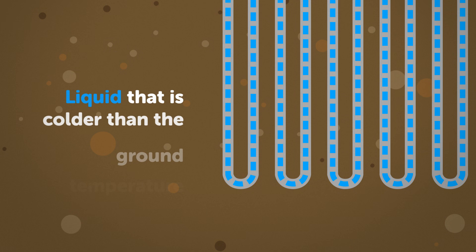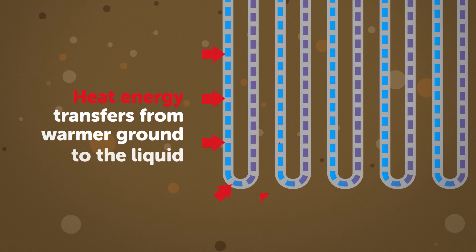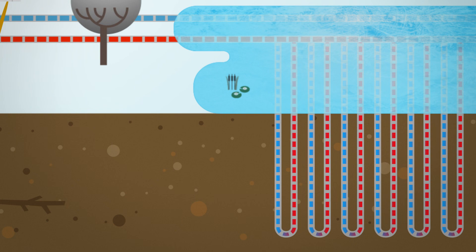To capture this energy, we run a liquid that is colder than the ground temperature through the boreholes. Because heat always moves from hot to cold, the energy transfers from the warmer Earth into the cooler boreholes. This energy is now in the geo-exchange system, where it's pumped to the energy center.